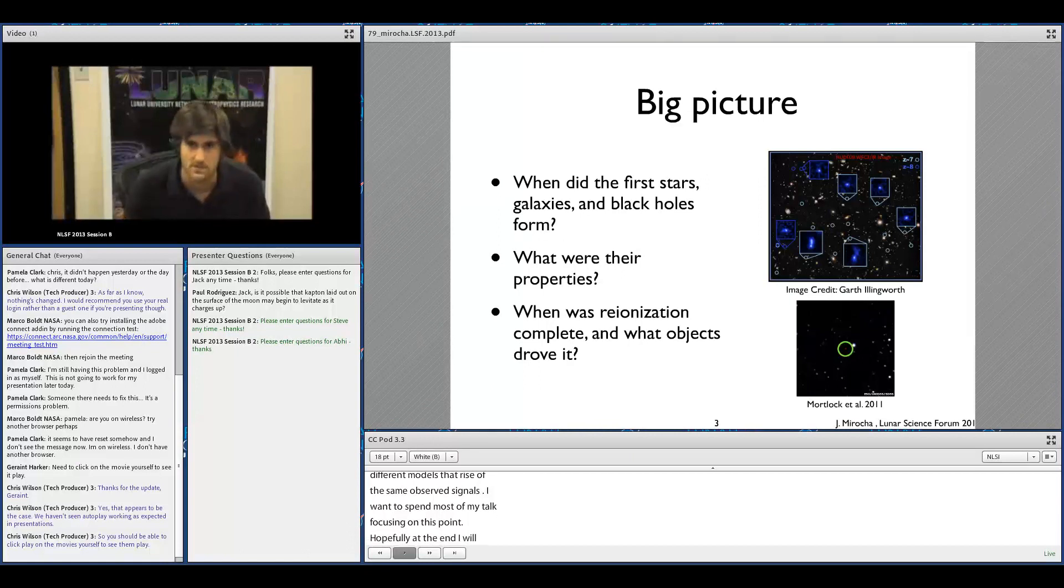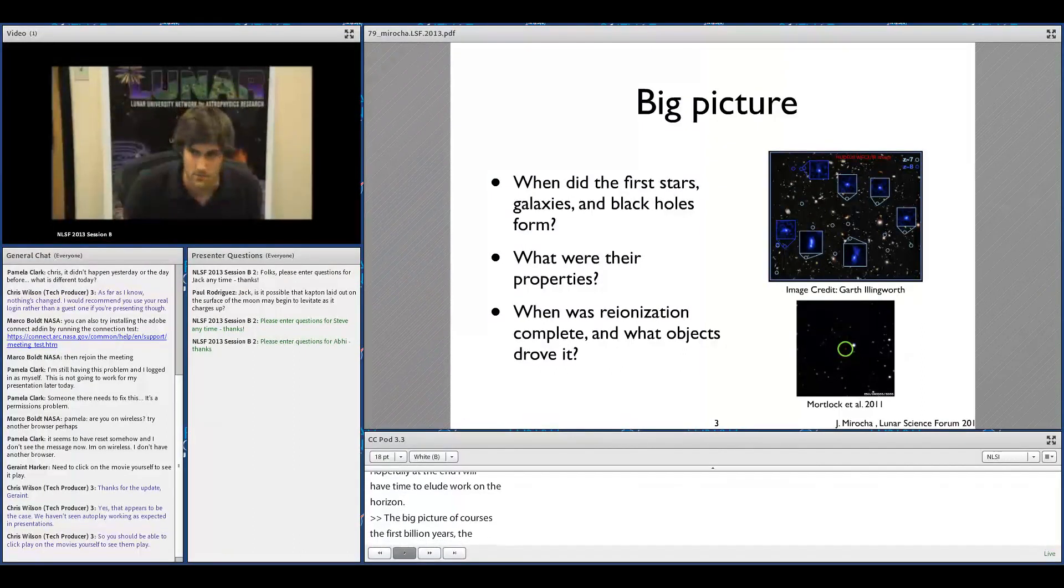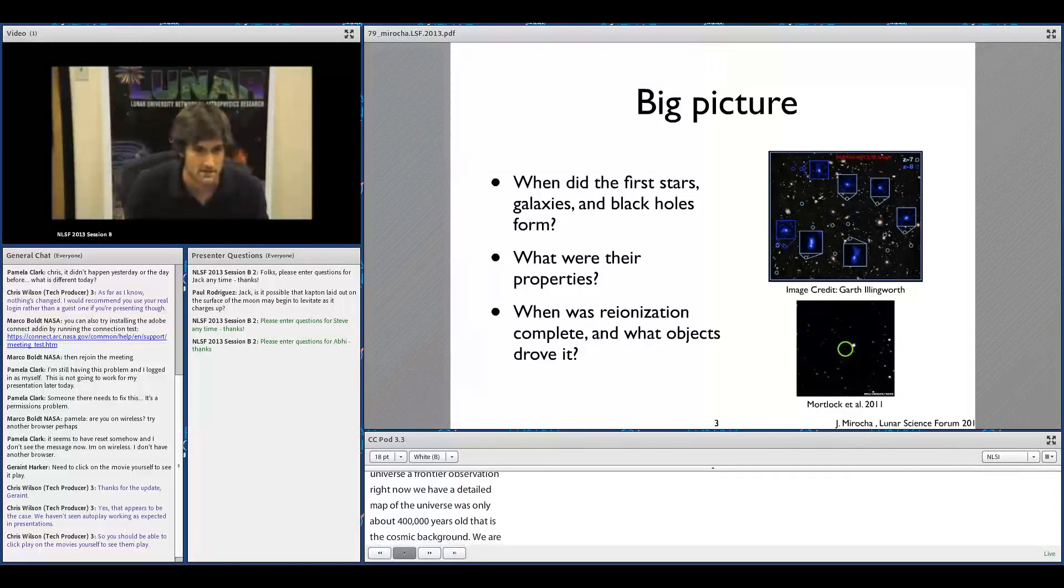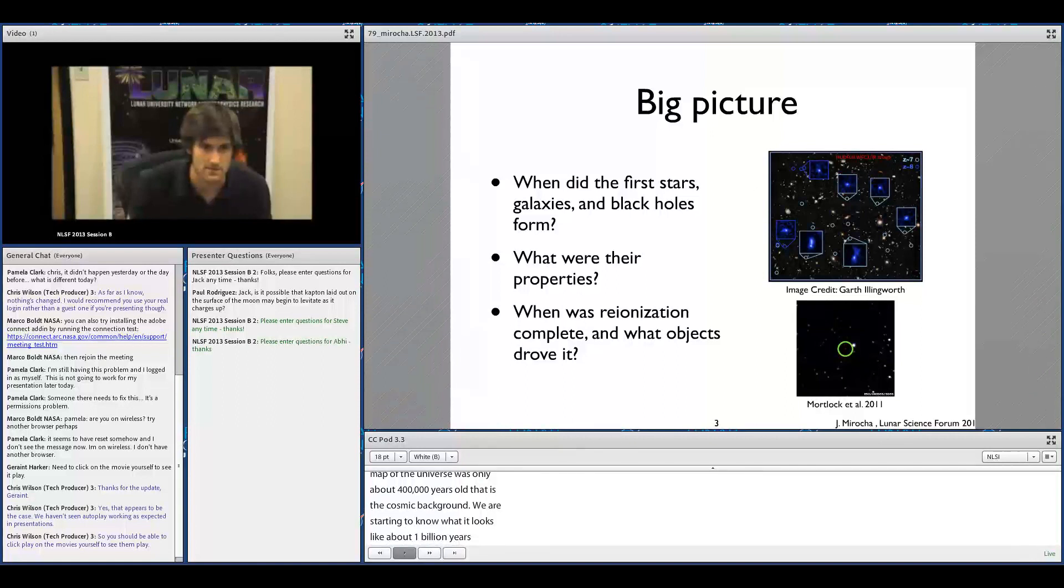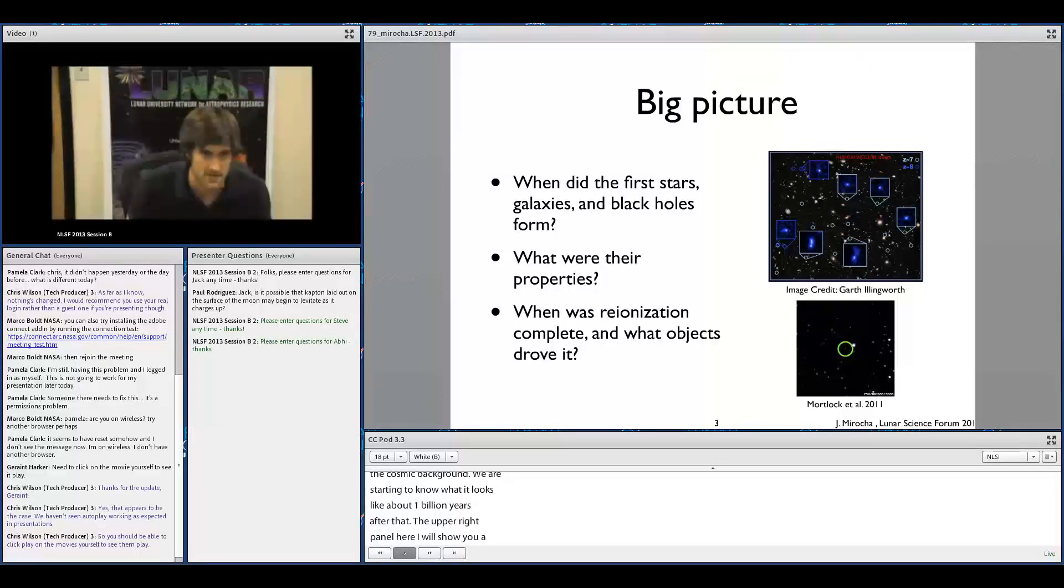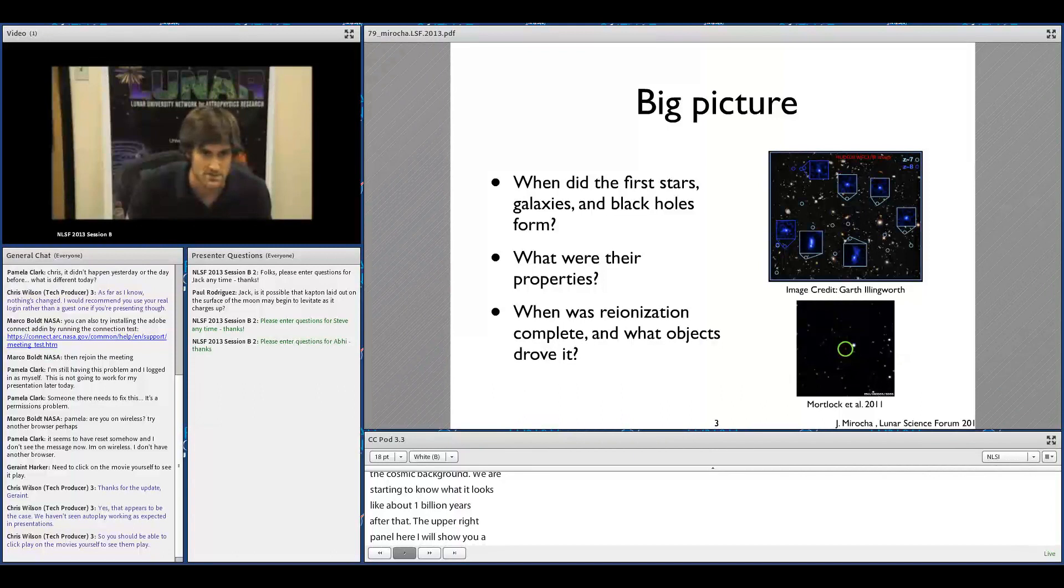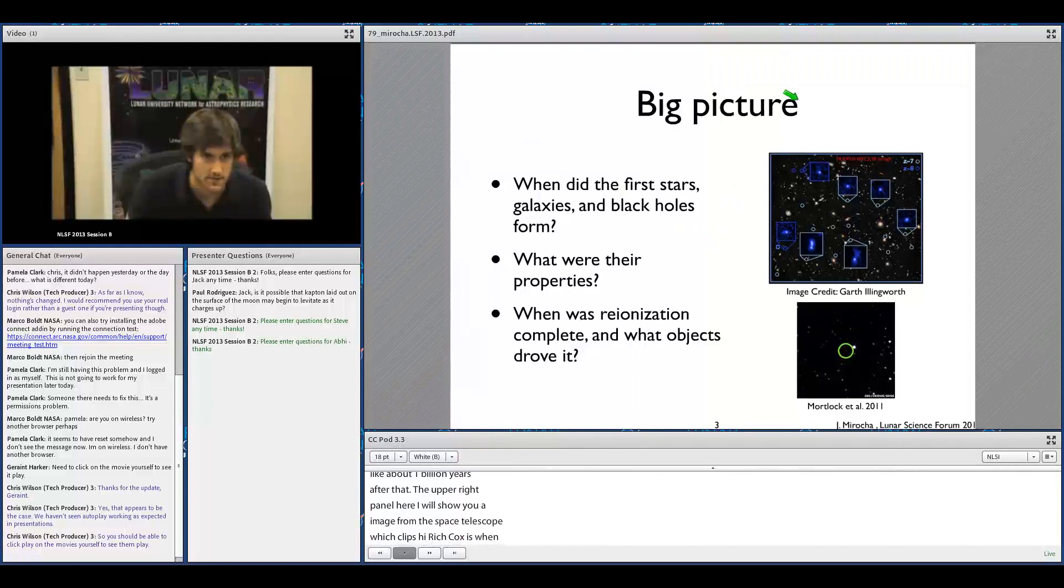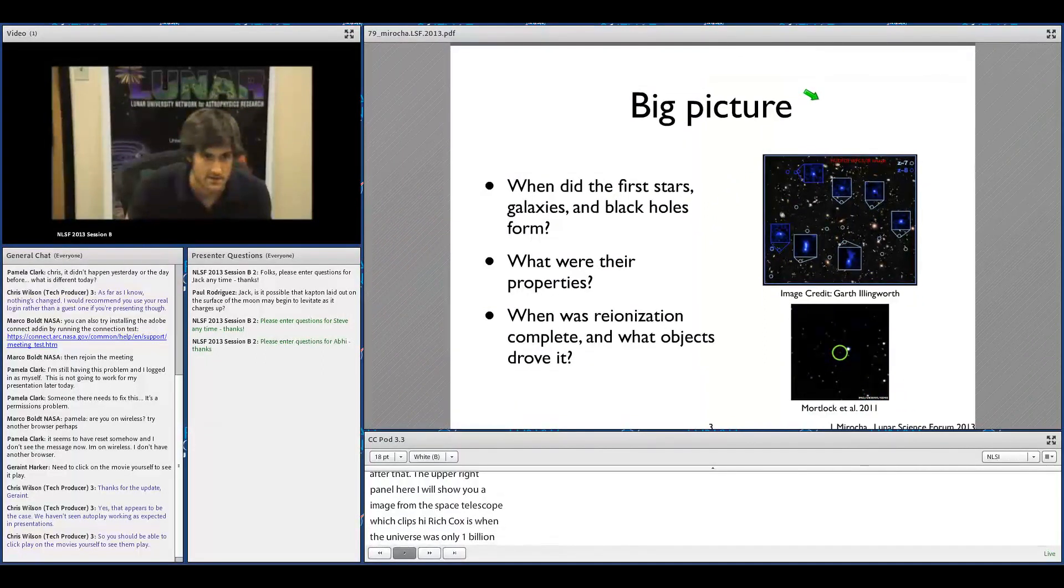So the big picture is the first billion years of the universe are really a frontier observationally right now. We have a detailed map of the universe when it was only about 400,000 years old - that's the cosmic microwave background. And we're starting to know what it looks like about a billion years after that. I'm showing you images from the Hubble Space Telescope that's starting to glimpse high-redshift galaxies when the universe was only a billion years old or less.